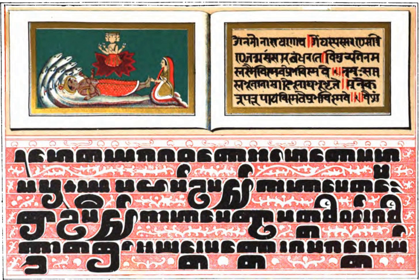Pali or Magadhan is a Middle Indo-Aryan language native to the Indian subcontinent. It is widely studied because it is the language of the Pali Canon or Tipitaka, and is the sacred language of some religious texts of Hinduism and all texts of Theravada Buddhism. The earliest archaeological evidence of the existence of canonical Pali comes from Pyu city-state inscriptions found in Burma, dated to the mid-5th to mid-6th century CE.